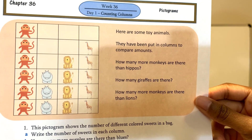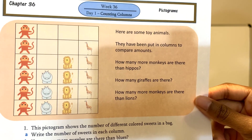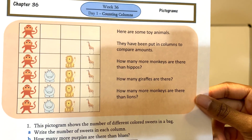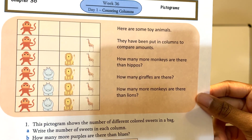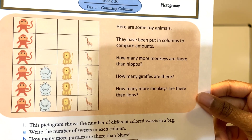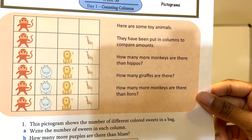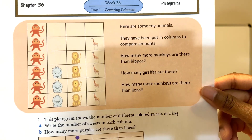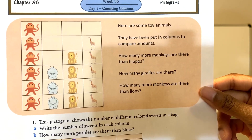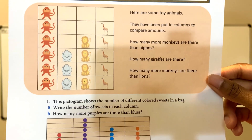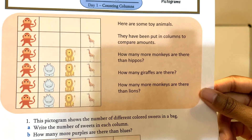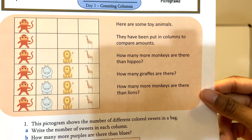Question number three, the final question: how many more monkeys are there than lions? We've determined that there are six monkeys. Now let's count the number of lions and determine the difference. One, two, three, four — there are four lions. There are six monkeys, and six minus four is two. There are two more monkeys than there are lions.